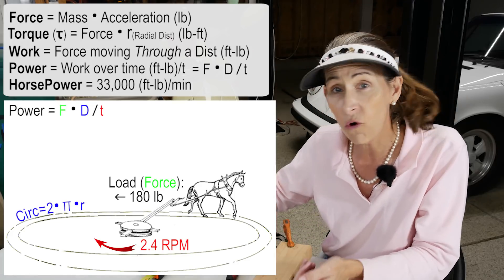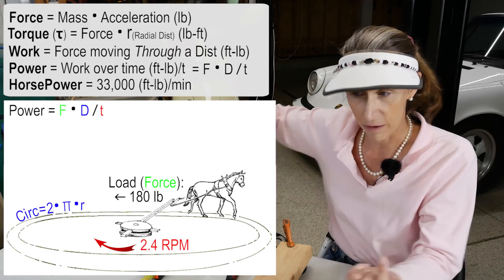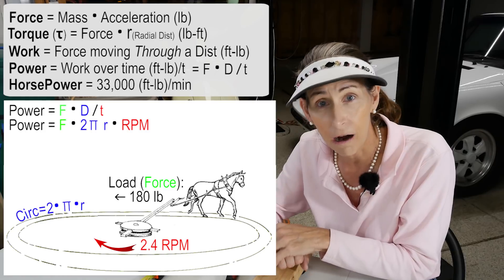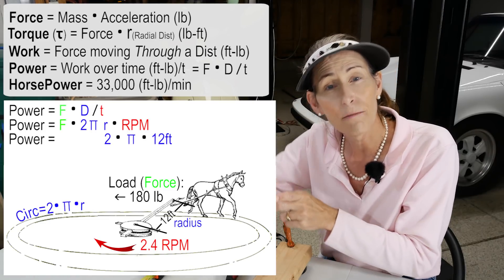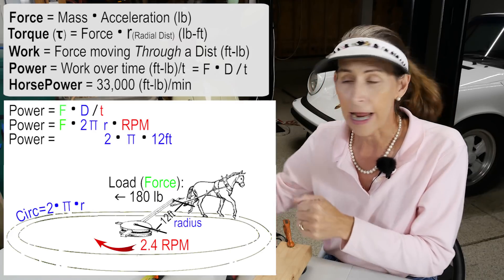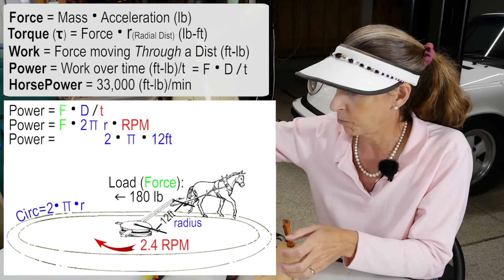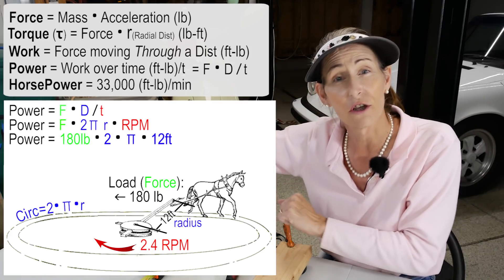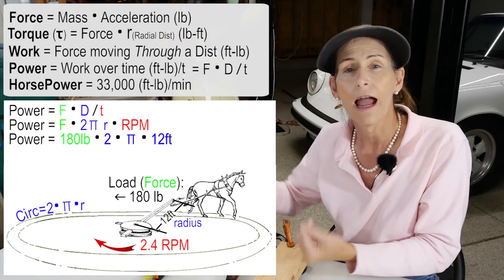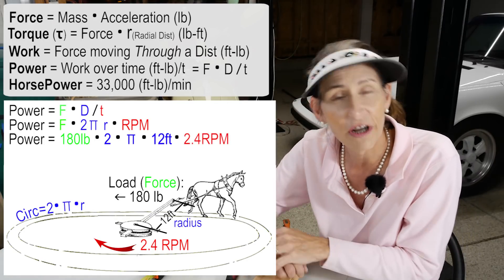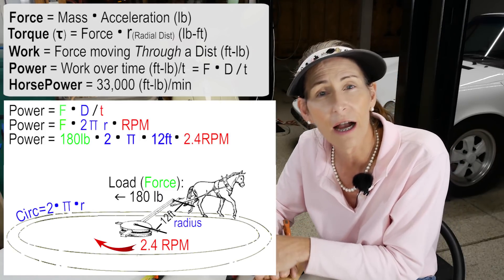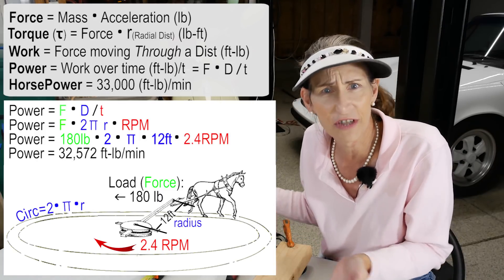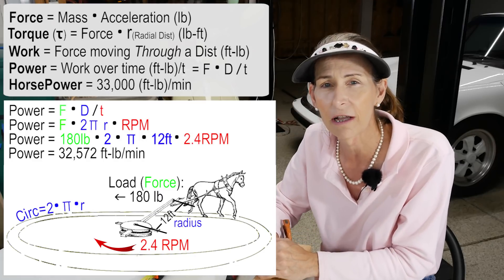So now he could calculate power. So power for this horse was the circumference of the circle, 2 pi r. r is 12 feet. So 2 times pi times 12. Great. And then it pulled 180 pounds. So times 180, and then it rotated at 2.4 rpms. Multiply that all out and you get 32,572 is what you get. 32,000.